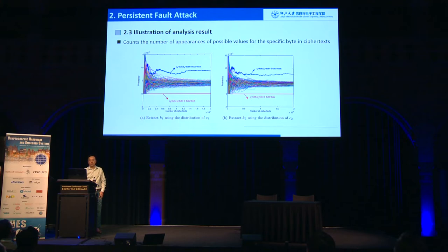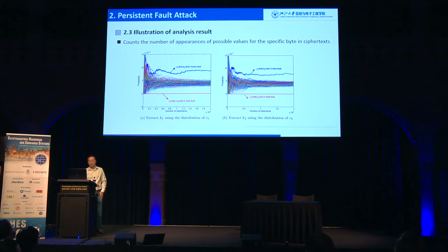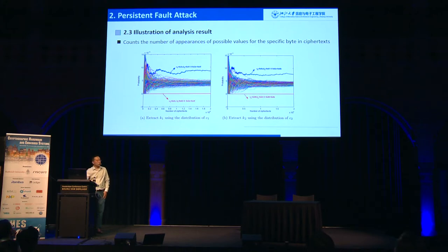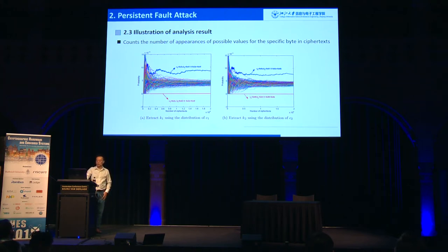Here is an illustration of our analysis result. The figure is quite similar to traditional DPA or CPA. The x-axis is the number of ciphertexts and the y-axis is the appearance probability of the values. Once you see the red curve, you can deduce the key associated with value v. Once you see the blue curve, you know the key associated with value v-star.